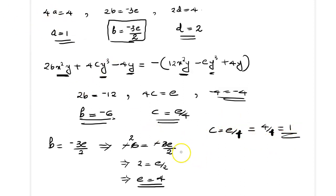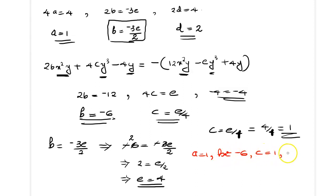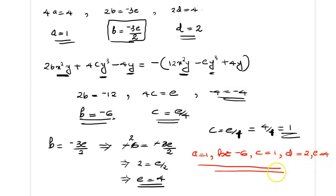So the final values are: a equals 1, b equals minus 6, c equals 1, d equals 2, e equals 4. These are the constants a, b, c, d, e for which the given function f(z) is analytic.